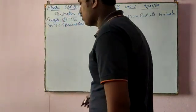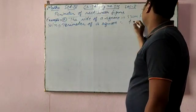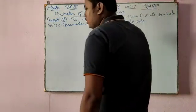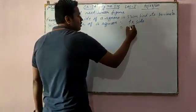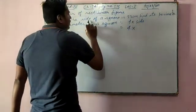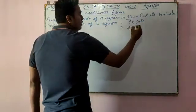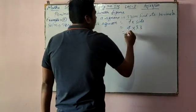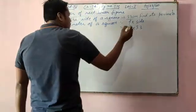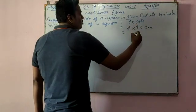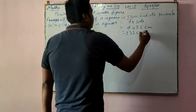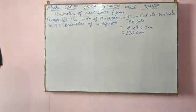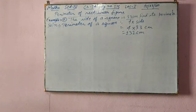So we know that Perimeter of a square formula is what? Perimeter of a square formula is 4 into side. Okay? Now 4, side is given. The side of a square is 33 centimeter is given. Okay? 33 centimeter side is given. Now just keep multiplying.